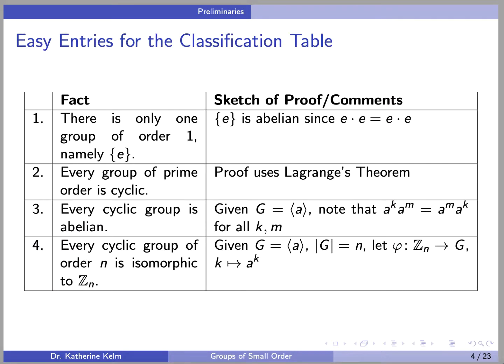Let's start with the easiest entries in the table. Fact 1: there is only one group of order 1, namely a group with a single element e, with operation e times e equals e. This group is clearly abelian.